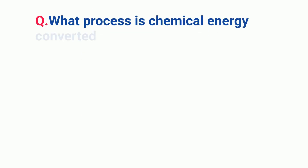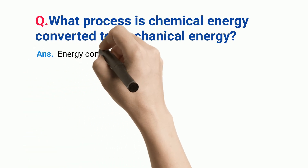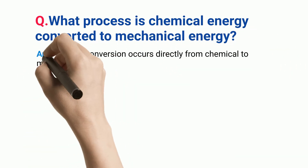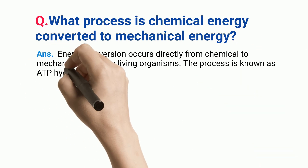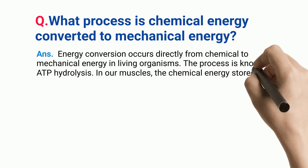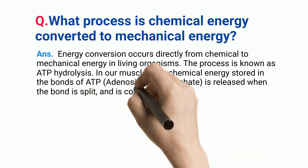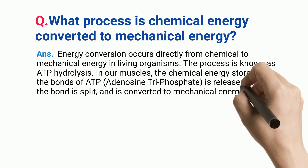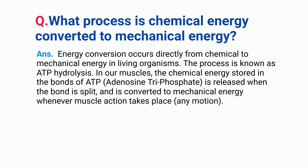What process converts chemical energy to mechanical energy? Energy conversion occurs directly from chemical to mechanical energy in living organisms. The process is known as ATP hydrolysis. In our muscles, the chemical energy stored in the bonds of ATP — adenosine triphosphate — is released when the bond is split and is converted to mechanical energy whenever muscle action takes place.